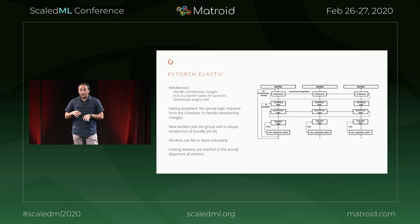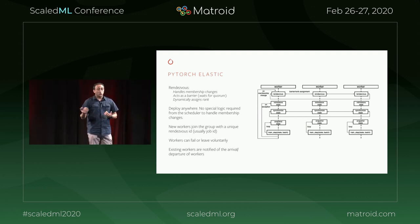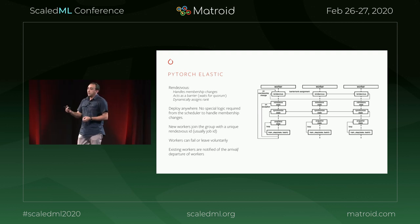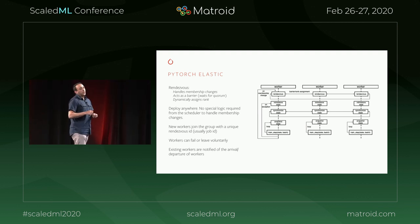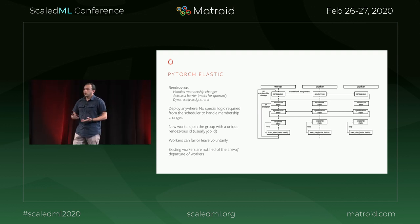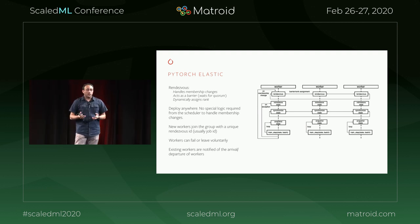Let's take a closer look under the hood. The key components of PyTorch Elastic: one key component is the Rendezvous mechanism, a library or method that gives you membership changes — new machines coming into your job or disappearing and failing. It also acts as a barrier, waiting until you reach the minimum number of machines before progressing, and dynamically assigns rank so you can do all-reduce properly. The nice thing about Rendezvous is that you can deploy it anywhere — PyTorch Elastic is now integrated with Kubernetes and AWS without requiring changes in the underlying scheduler infrastructure. You can write your model once with PyTorch Elastic and essentially run everywhere.